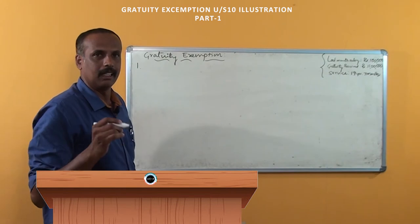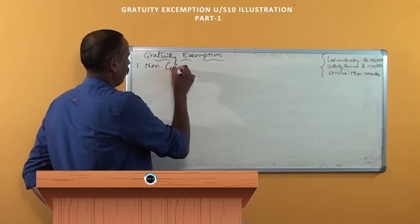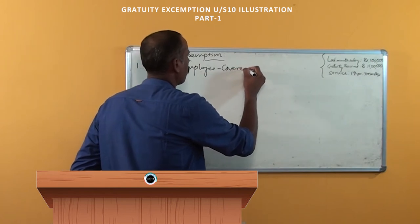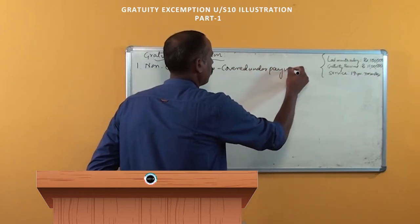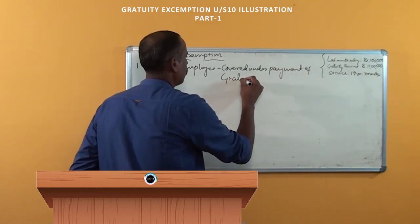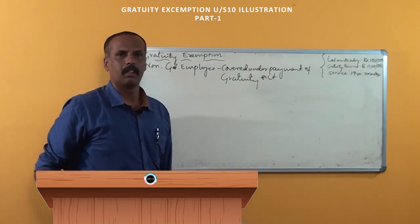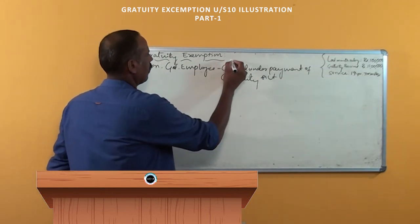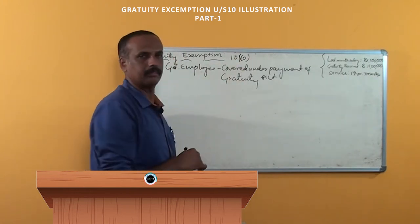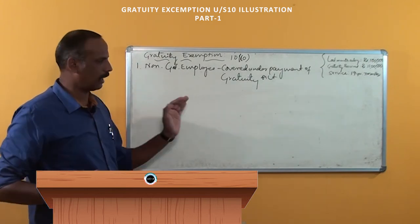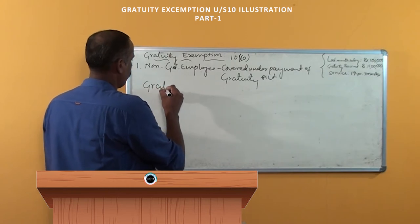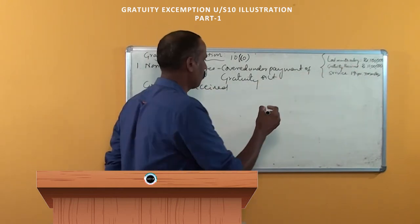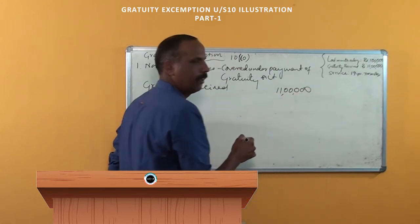First: non-government employee covered under the Payment of Gratuity Act. We are going to apply the provision under Section 10 subsection 10. In this case we have to calculate the exemption. First, gratuity received — how much gratuity is received? Rupees 11 lakh. Now we have to apply the exemption.